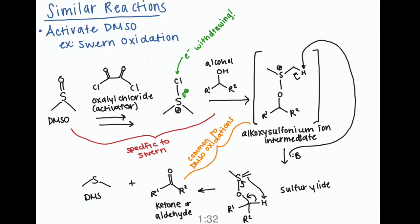There are a number of similar reactions to the Kornblum oxidation, and many of them really are just changing how DMSO is activated. So one that we've learned about recently in the textbook is the Swern oxidation. It uses an activator called oxalyl chloride, which adds a chlorine atom instead of where the oxygen atom was. And that chlorine atom is more electron withdrawing, which improves the electrophilicity of the sulfur atom.